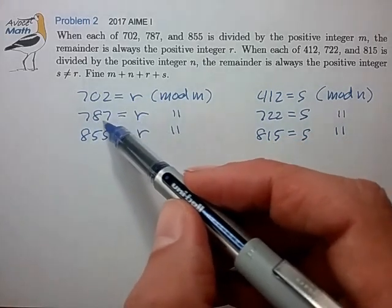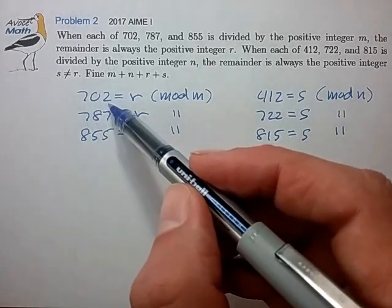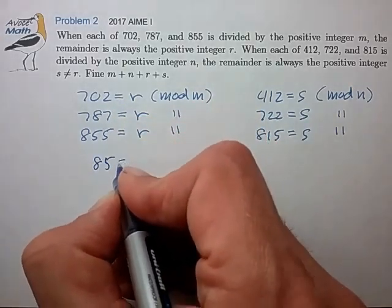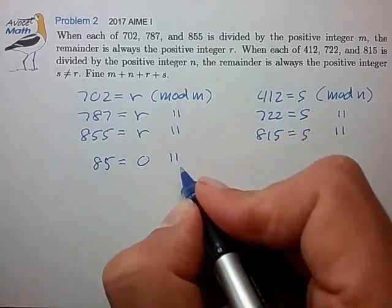So let's take 787 minus 702. And we find out that 85 is equal to 0 mod m.